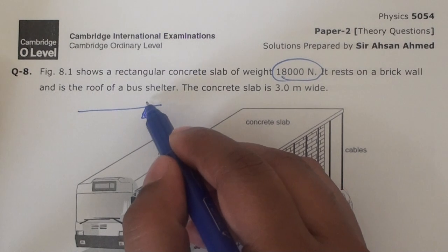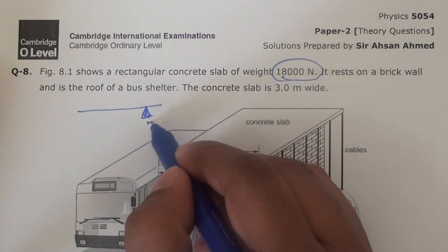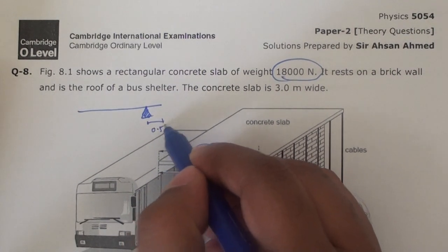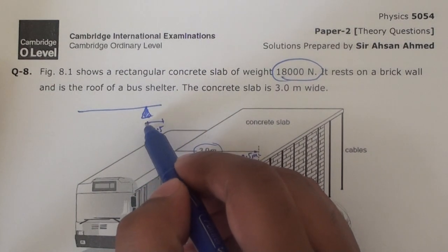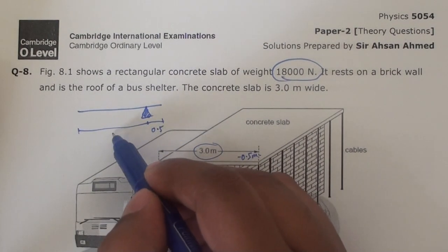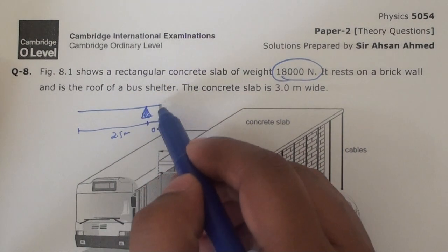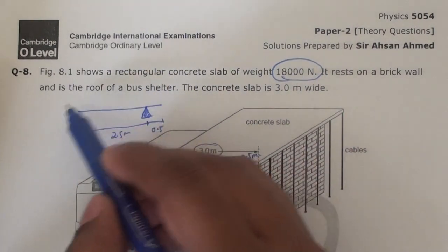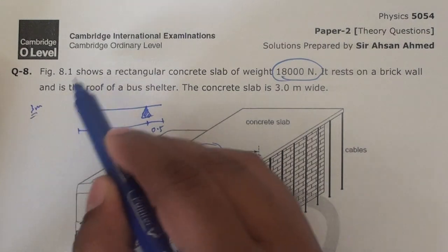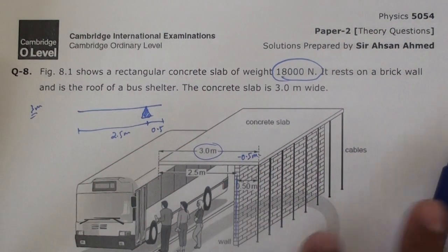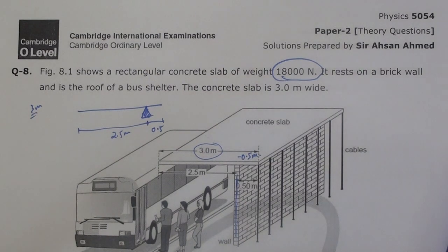This is the pivot. So this distance is 0.5 and here is 2.5, right. So this is the distance of this whole 3 meter long slab.